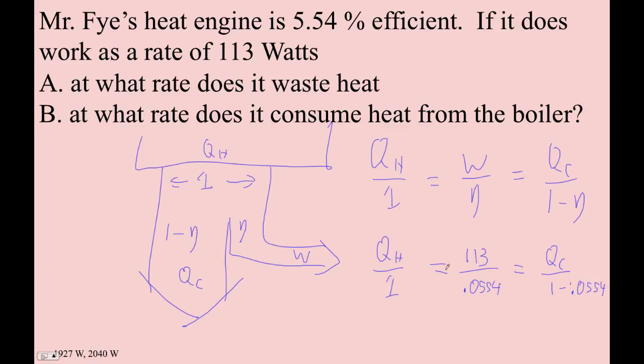So I could just very quickly, I can go 113 divided by 0.554. And I get 2039.711. And then I can take that number, I can go 113 divided by that, I've got that, and then multiply by this. Times parentheses 1 minus 0.554. And presto, change-o, without even subtracting, I've got 1926.711 as my QC.